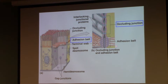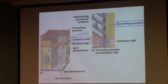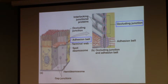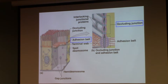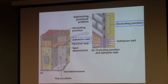Then the idea of an adhesion belt — let the words help you. Adhesion means sticking things together. And a belt goes all the way around my waist — it doesn't just start here and here. So this must be a belt-like structure that helps to stick cells together and goes all the way around the inside of my cell. Both cells are involved in making the entire structure.